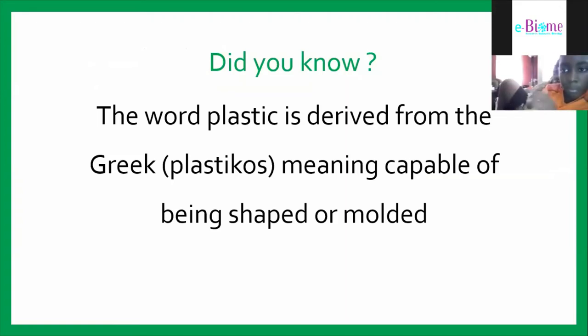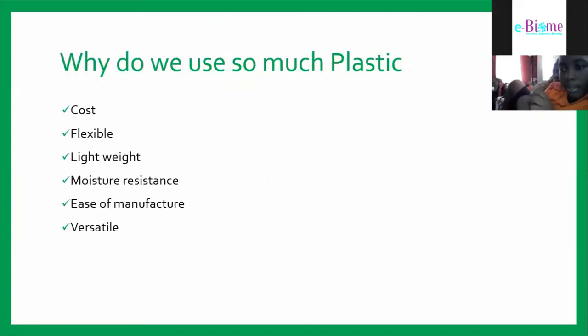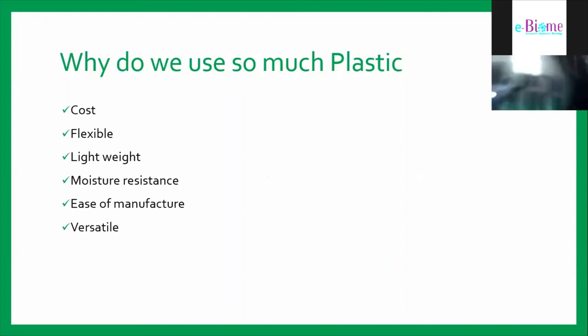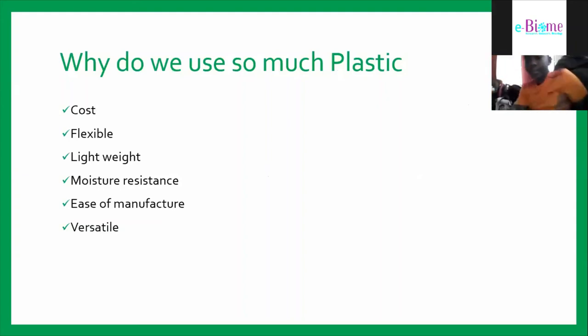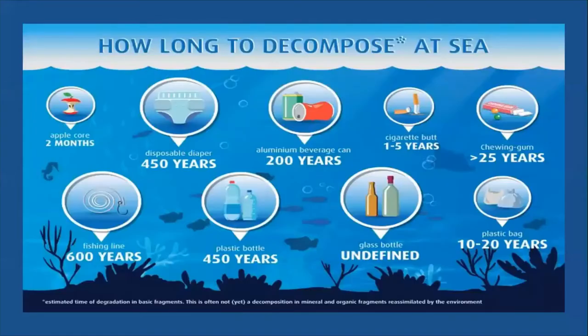Did you know that the word 'plastic' is derived from the Greek word 'plasticos,' meaning 'capable of being shaped or molded'? This is common throughout science — many words are derived from Greek terminology. We use plastic because of its cost: it's flexible, lightweight, moisture-resistant, easy to manufacture, and versatile. Compared to other materials used to store food, it's cheaper to produce, burns less fossil fuel, and is more durable. How long does certain plastic take to decompose? As the video mentioned, certain plastics take up to a thousand years.